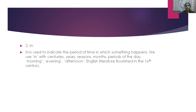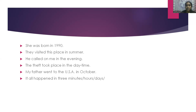The next word is 'in'. In is used to indicate the period of time in which something happens. We use 'in' with centuries, years, seasons, months, periods of the day — morning, evening, afternoon. For example: English literature flourished in the 16th century. She was born in 1990. They visited this place in summer.